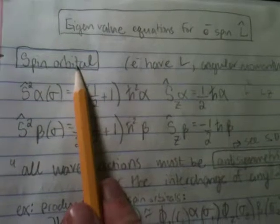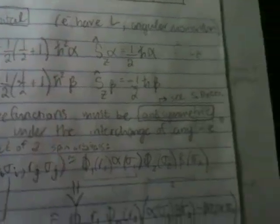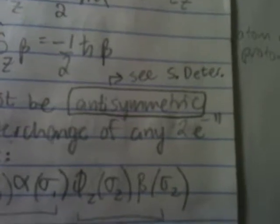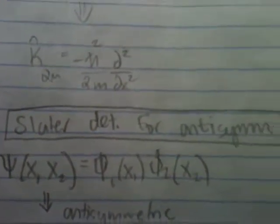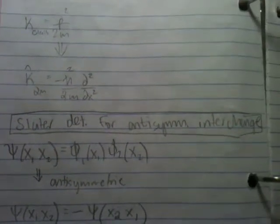Now to connect these spin orbitals with what we've been talking about, to make sure that you have anti-symmetric wave functions you use the S-determinant. You see that's abbreviation CS-deter, turns out to be the Slater determinant for anti-symmetric interchange.